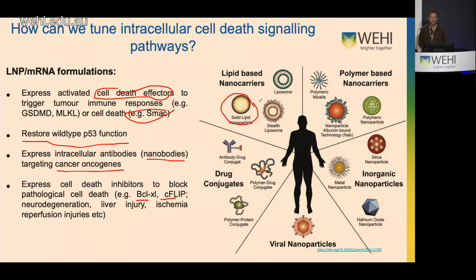Question: Do you know anything about caspase 10 levels in those human cases which are caspase 8-deficient? Response: In the human caspase 8-deficient cases with early-onset IBD, I can tell you that caspase 10 mutations have been identified in humans and those patients develop autoimmune lymphoproliferative disease, but it's quite distinct from caspase 8-deficient patients, who have immunodeficiency, infections, and inflammatory bowel disease. So they're not completely redundant.